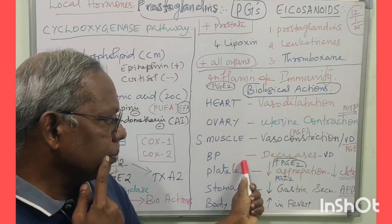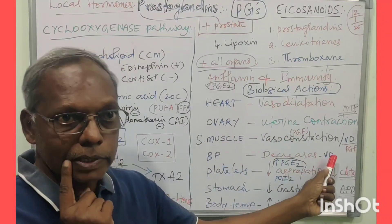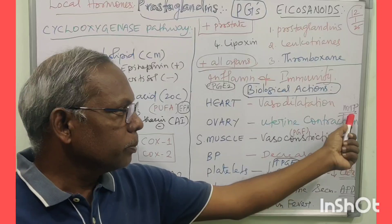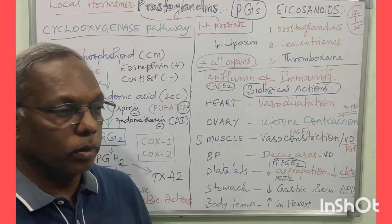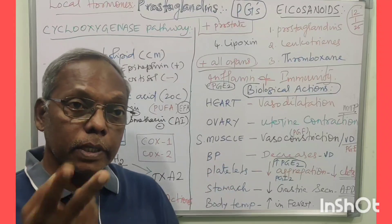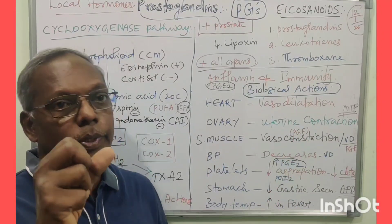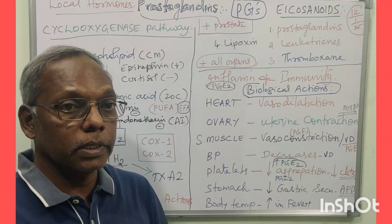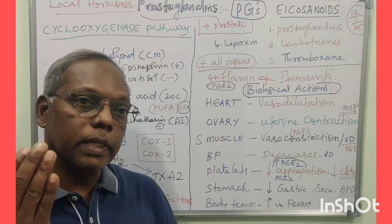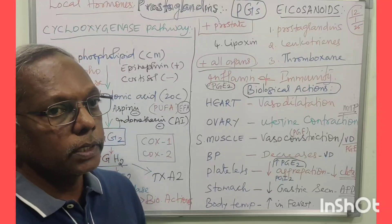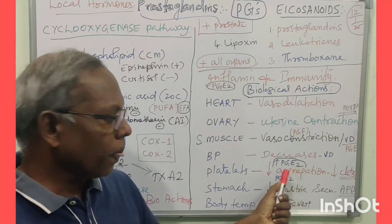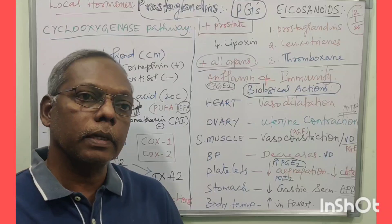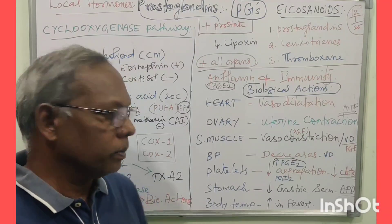The biological actions include: vasodilatation in the heart, decreased blood pressure, vasodilatation of uterine smooth muscle, role in medical termination of pregnancy, and smooth muscle effects. PGE2 causes vasodilatation. Platelets are also affected.